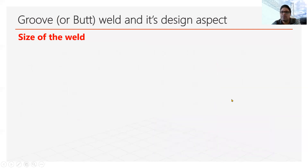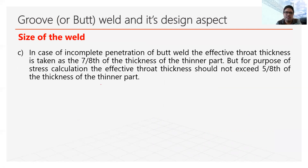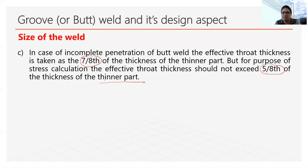In case of partially penetrated groove welds, the effective throat thickness is generally 7/8 times the thickness of the thinner part. But in calculations of stresses or strength, we generally take the effective throat thickness as 5/8 times the thickness of the thinner part. If there are two unequal-thickness plates, we consider the thinner part; otherwise we take the thickness of the plate.